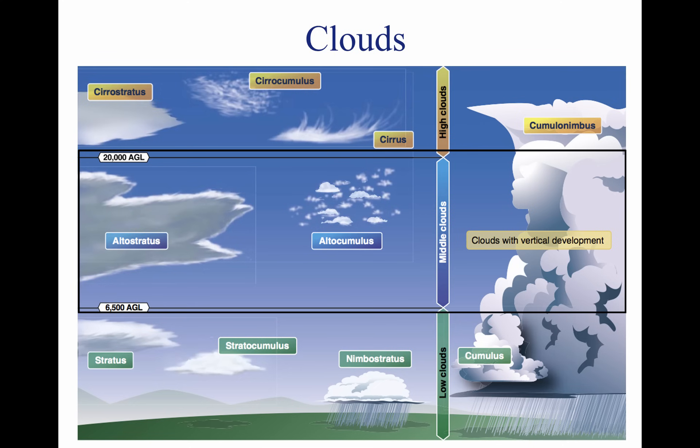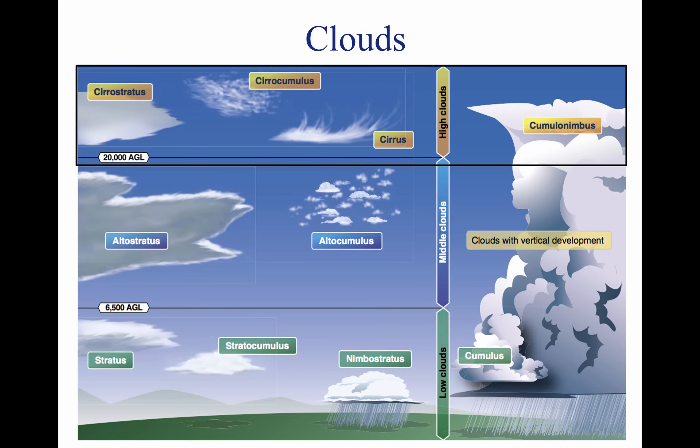High clouds form above 20,000 feet AGL and usually form only in stable air. They are made up of ice crystals and pose no real threat of turbulence or aircraft icing. Typical high-level clouds are cirrus, cirrostratus, and cirrocumulus.